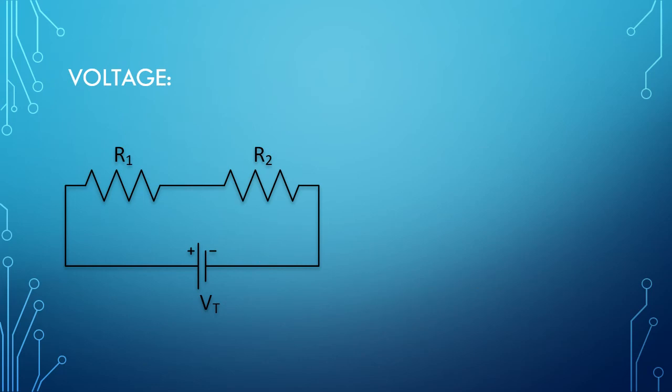Voltage on the other hand can be different across each resistor. Just like a stronger pump is needed to push water through a narrow or more resistive pipe, higher voltage is needed to establish the same current through a higher resistance.